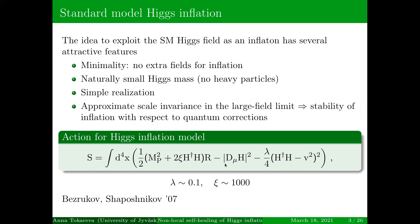This is the action for the Higgs inflation model. You need to add to the standard model just one term — the coupling to curvature. Then you can easily get an inflationary stage for Xi of order 10^3, for quite large Xi. This was shown by Bezrukov and Shapochnikov in the year 2007.